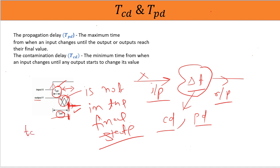So till Tcd, output is in the initial state. We are sure there is no change in the output. At Tcd, output starts to change, or we will say input reflects at the output at t equals Tcd.